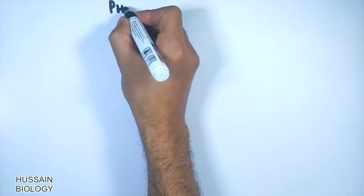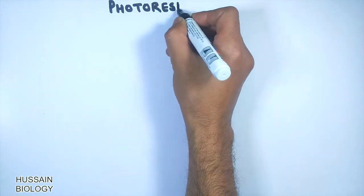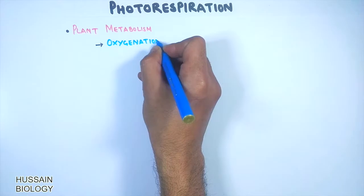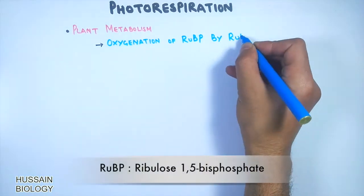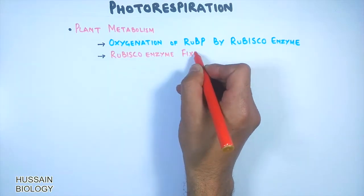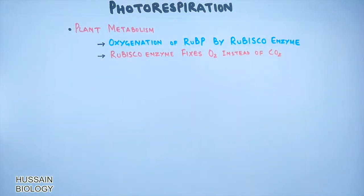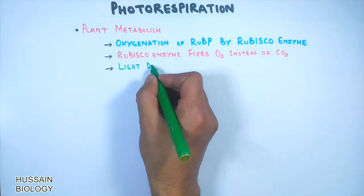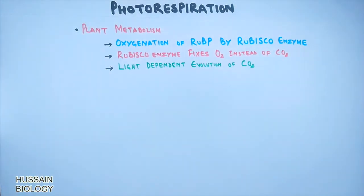In this video we are going to discuss about the photorespiration process. Photorespiration is a plant metabolism process where there is oxygenation of ribulose bisphosphate by the rubisco enzyme, where rubisco fixes oxygen instead of carbon dioxide. This process is also called light-dependent evolution of carbon dioxide, since it needs light to proceed.